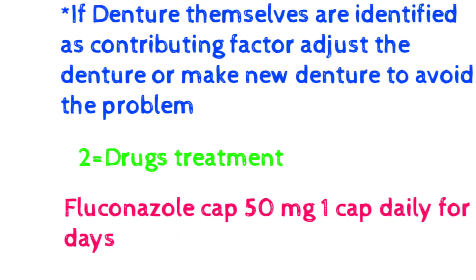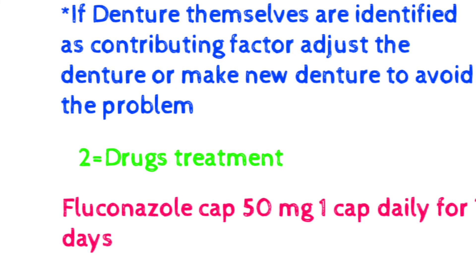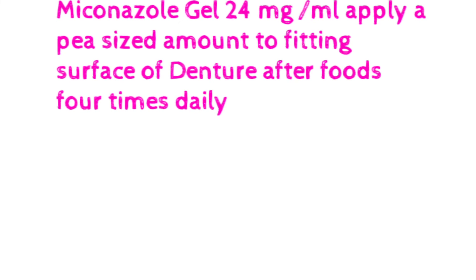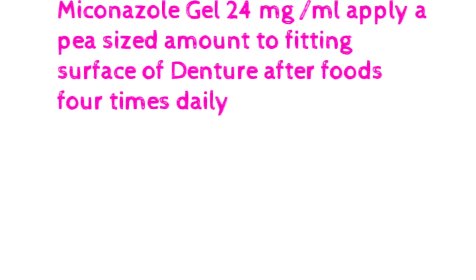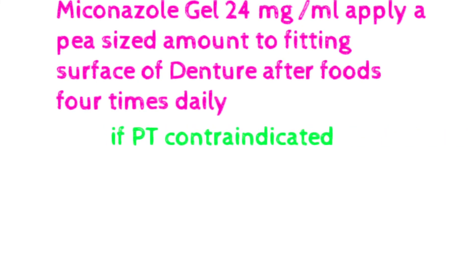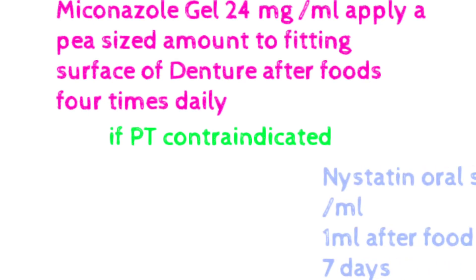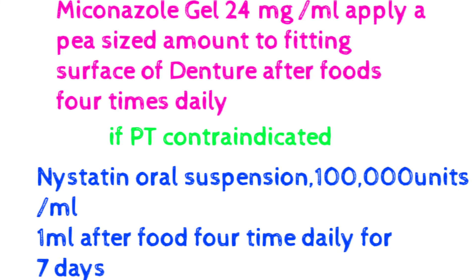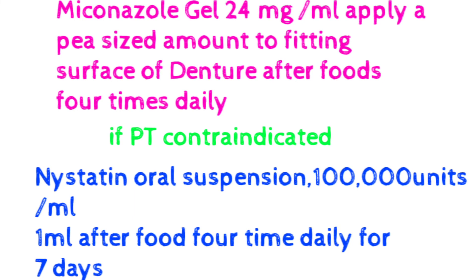In drug treatment, we give three types of drugs. Number one: fluconazole capsule 50 mg, one capsule daily for seven days. Number two: miconazole gel 24 mg/ml — apply a pea-size amount to the fitting surface of the denture after meals, four times daily. Number three: if fluconazole and miconazole are contraindicated, we go for nystatin oral suspension 100,000 units per ml, one ml after foods, four times daily for seven days. Drug treatment is mainly given for seven days.